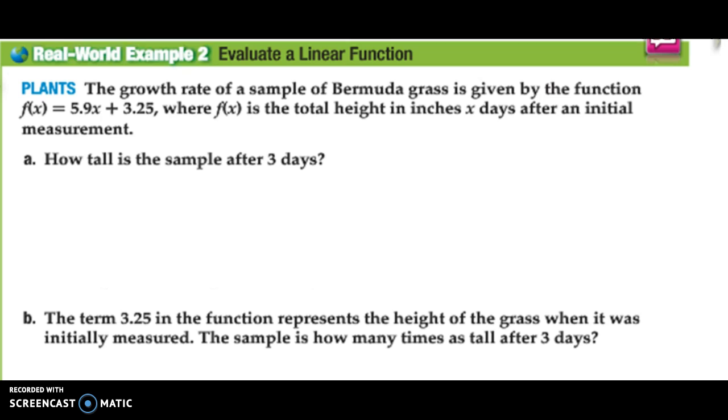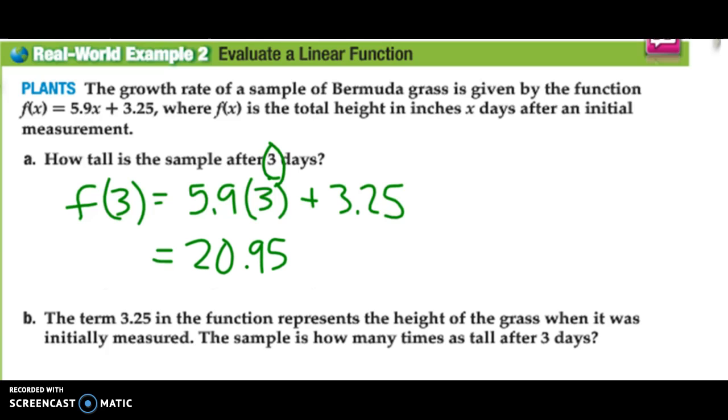We can evaluate linear functions by putting in a value for x. The growth rate of a sample of Bermudagrass is given by the function f(x) equals 5.9x plus 3.25, where f(x) is the total height after x number of days. How tall is the sample after three days? They're asking me to put 3 in for x. So f(3) is equal to 5.9 times 3 plus 3.25. I can go to my calculator and find out that's 20.95 inches.